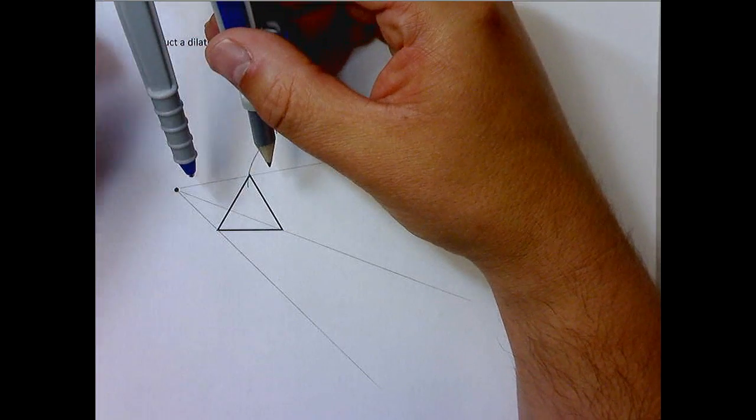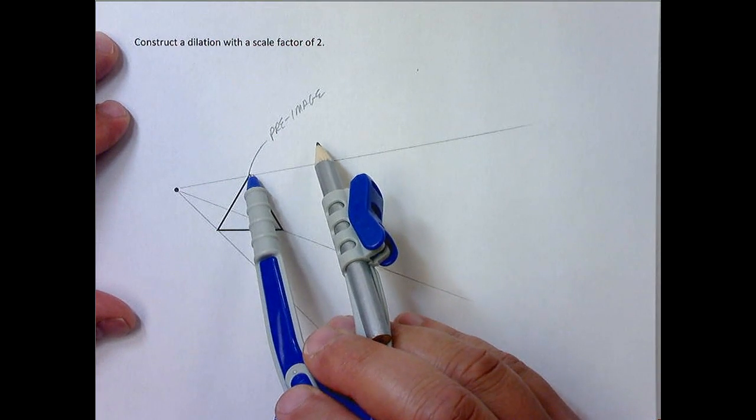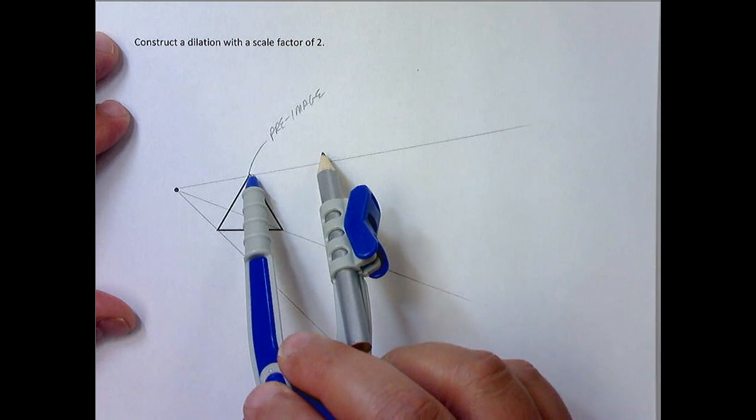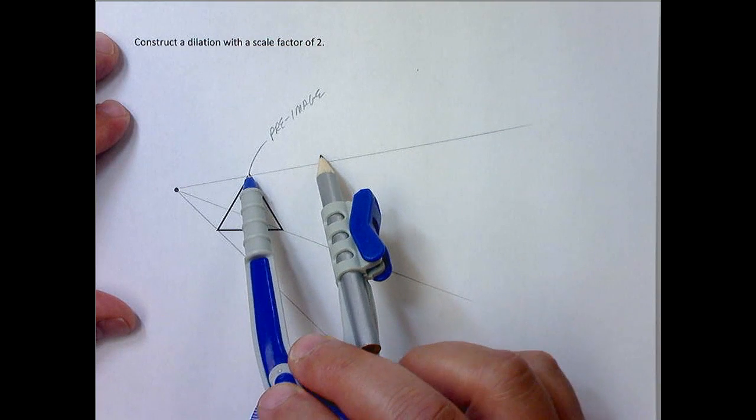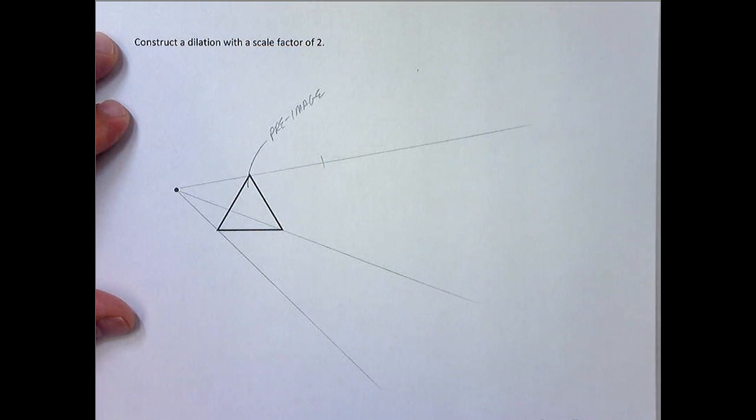Okay, and then what you're going to do is you're going to pick it up, slide the center. Now your compass tip is on the vertex and you give a little arc. Okay, nice little swoop.